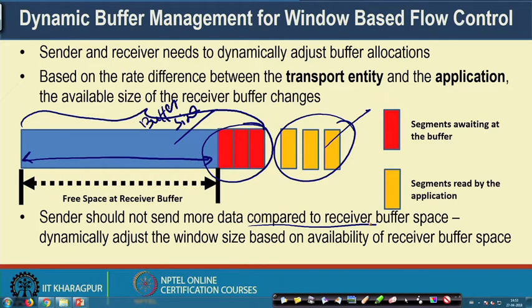The sender window size determines how much data can be sent without waiting for acknowledgement. If the receiver sends feedback indicating its available buffer space, the sender sets its window size to at most that value, ensuring it never sends more data than the receiver can hold. Once the receiver receives the data and the application reads it, the receiver sends an acknowledgement announcing the available buffer size.